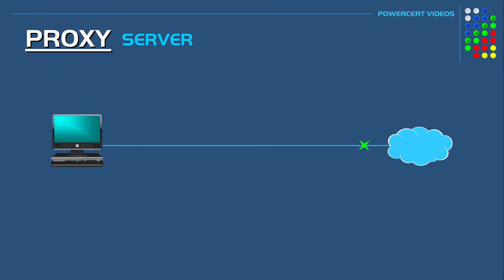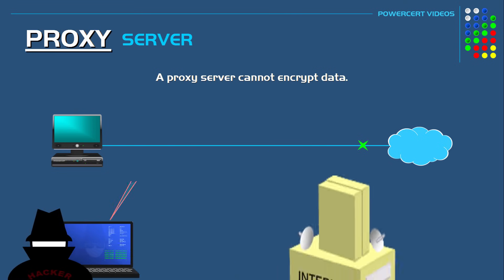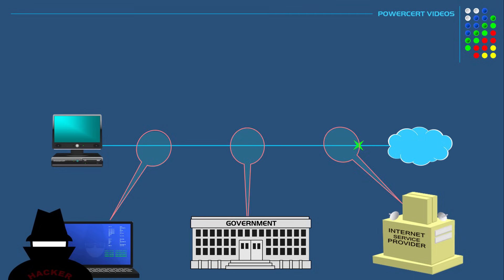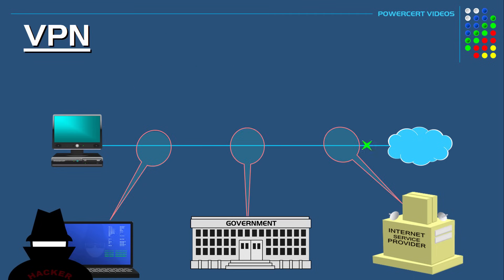There is one notable thing a proxy server cannot do: encrypt data as you surf the internet. When data is not encrypted, it can be intercepted by hackers, ISPs, or governments with the proper equipment. This is where a VPN comes in.